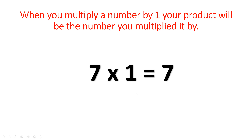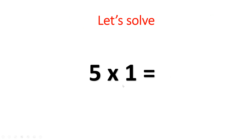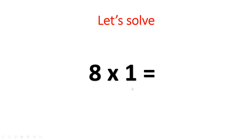Let's do some together. Let's solve five times one. I have two factors, five and one. Any number multiplied by one will be that number. So five, when multiplied by one, will equal five. Let's do one more together. Eight times one — any number multiplied by one equals that number. So eight times one equals eight.